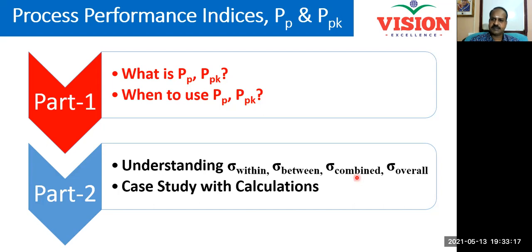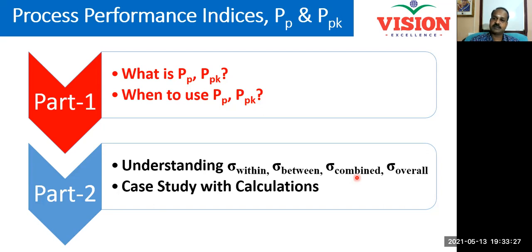So what are these standard deviations and how can we actually calculate them? Thereby we can calculate both CP and CPK as well as PP and PPK. We will understand that with a simple example so that things will become easier.